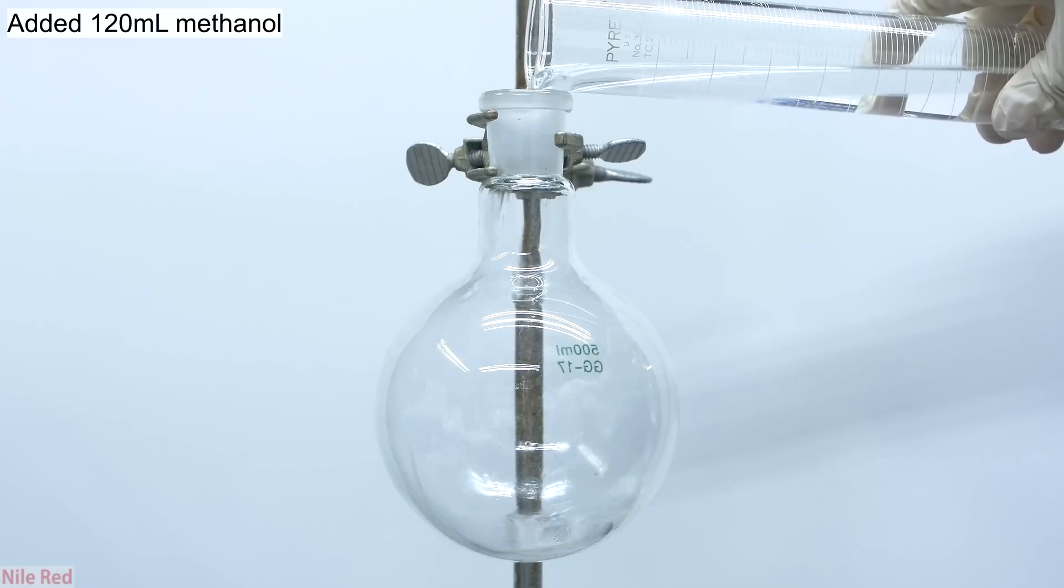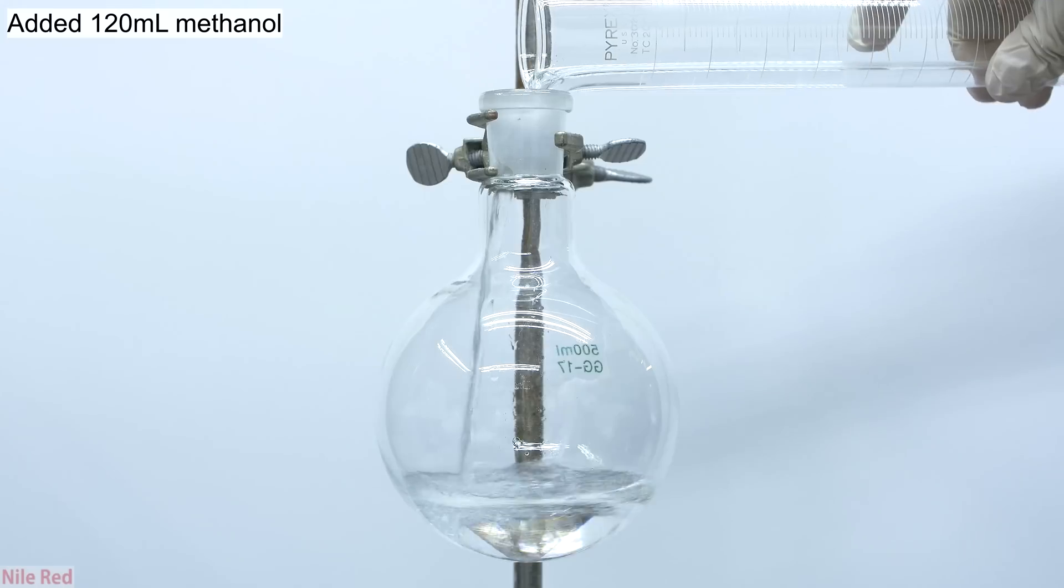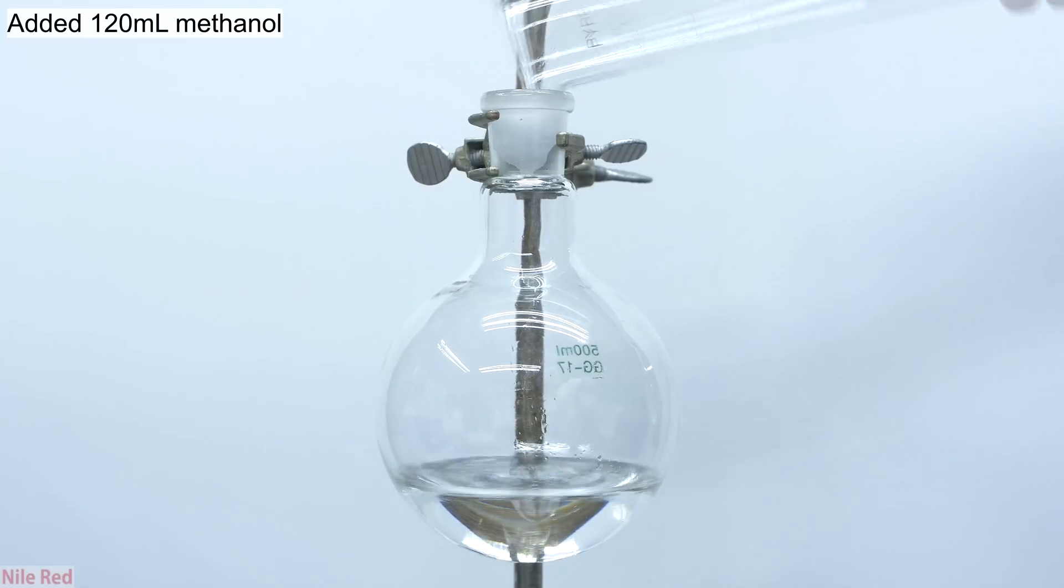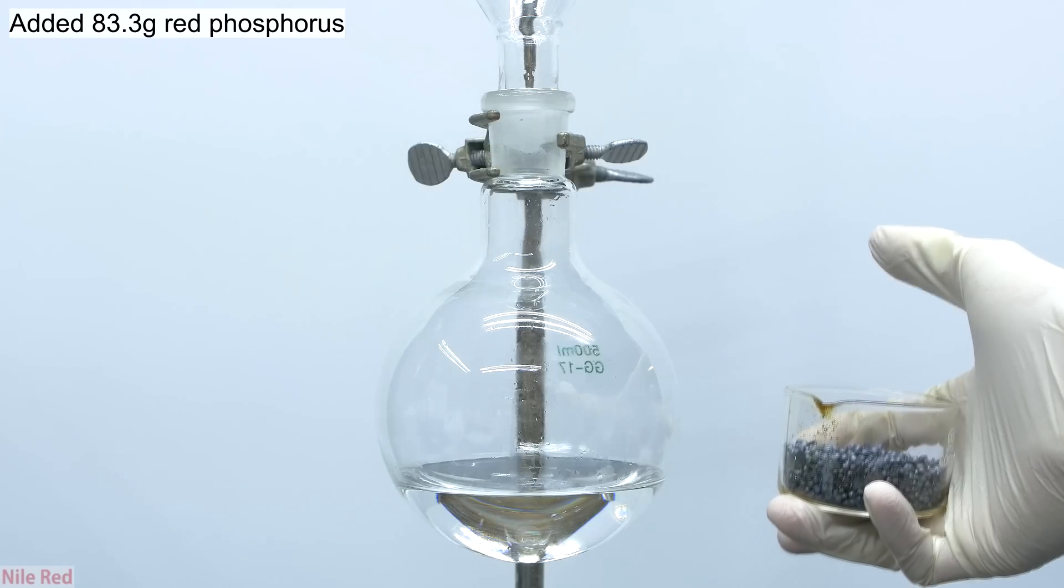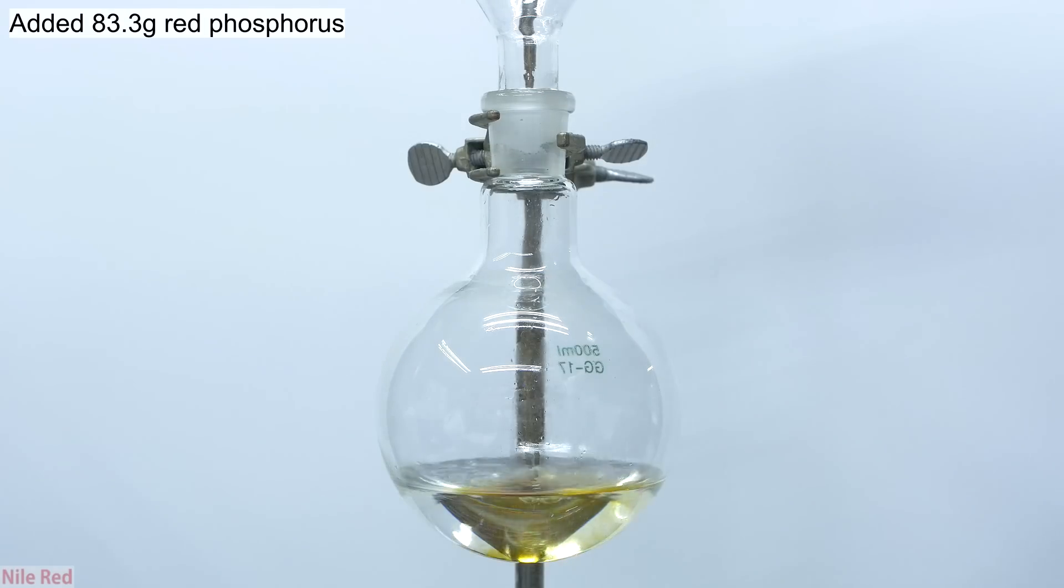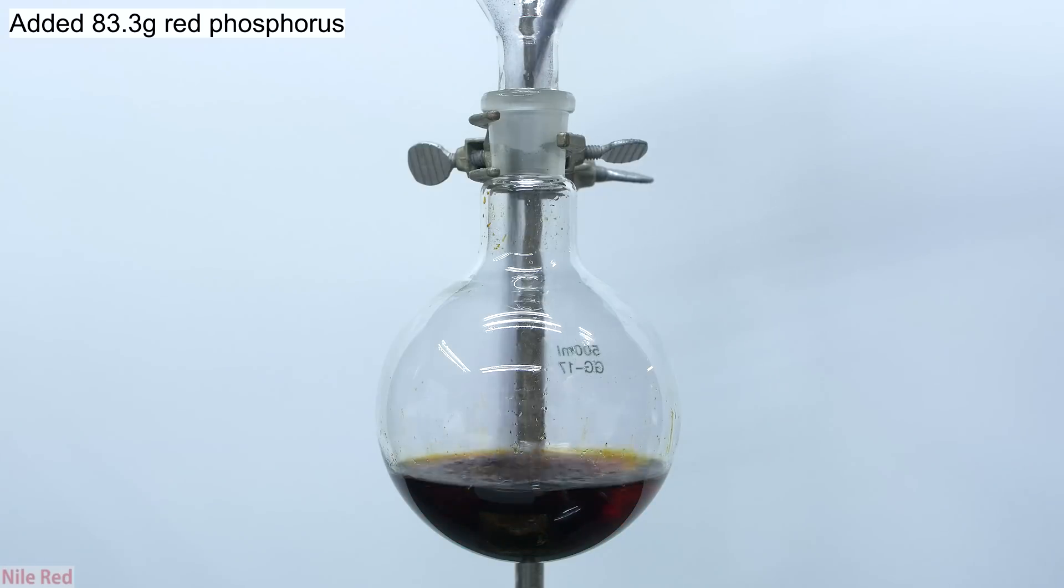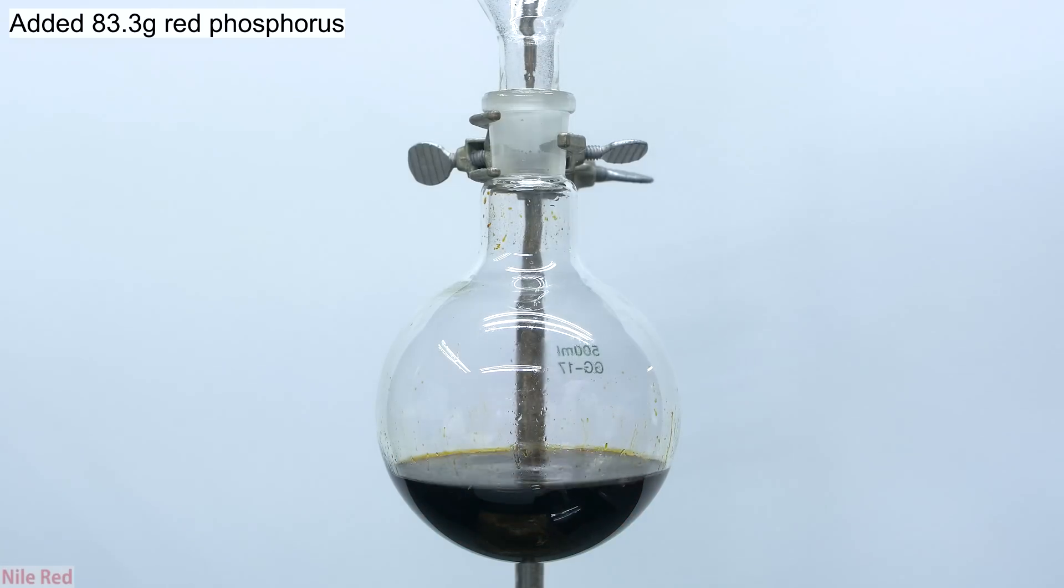To start things off, I poured in about 120 milliliters of methanol into a round bottom flask. Into the methanol I then dumped in directly about 83.3 grams of iodine. The moment that it's added, it starts to dissolve in the methanol and very quickly becomes a nearly black color.